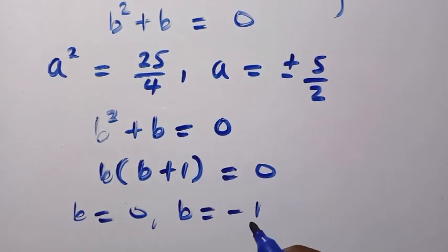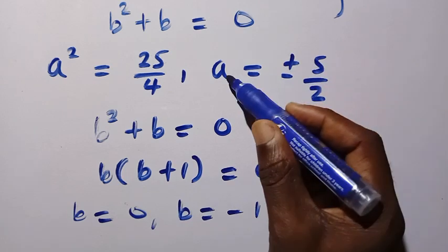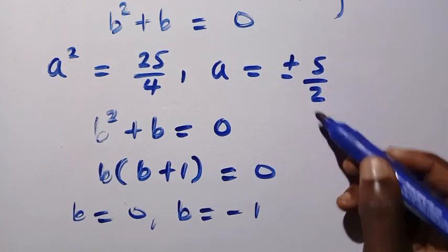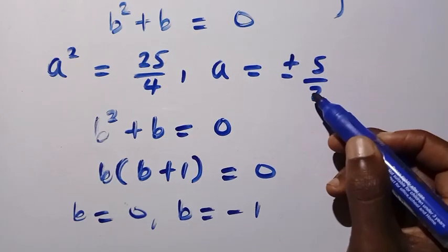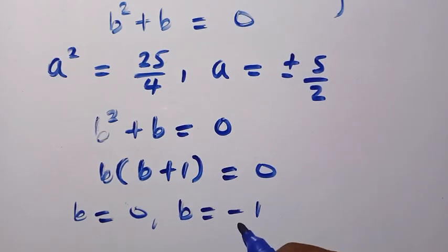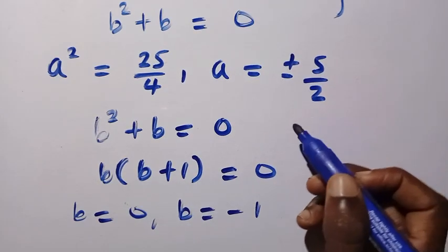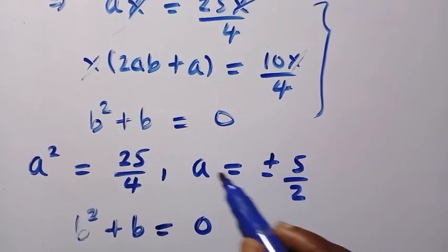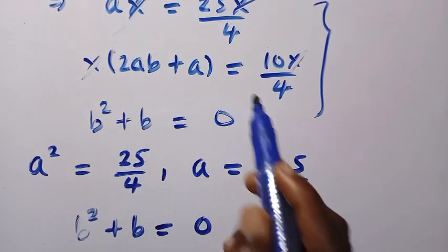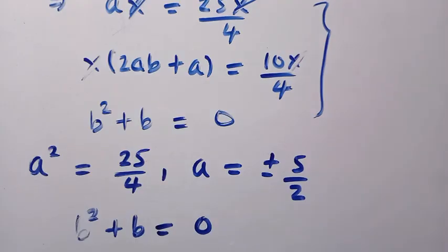So b equals 0, b equals minus 1. We cannot know the value of a equals 5 over 2 for us to get b, and the other one which is minus 5 over 2 to get negative. So let's try and consider substituting this a into this expression to know which one is 0 and which one is negative 1.